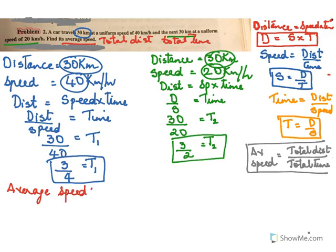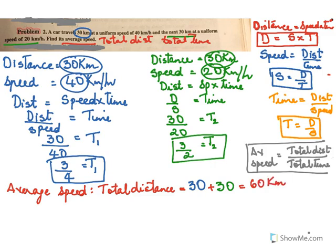For average speed, the first thing is to find total distance. The first section was 30 kilometers plus the next was also 30 kilometers, so the total distance is 30 + 30 = 60 kilometers. Now we need to find total time, which will be t1 + t2.